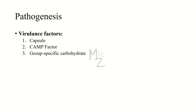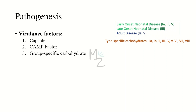Pathogenesis — virulence factors: a major virulence factor of streptococcus agalactiae is its capsule. It has type-specific carbohydrates including types Ia, Ib, 2, 3, 4, 5, 6, 7, and 8, responsible for different diseases — early onset neonatal disease is caused by types Ia, 3, and 5; late onset neonatal disease by type 3; and adult disease by types Ia and 5. The second virulence factor is the CAMP factor — an acronym named after its discoverers — which enlarges the area of hemolysis for Staph aureus and is used for identification of strep agalactiae. There is also group-specific carbohydrate, the B antigen, because this bacterium belongs to Lancefield group B.